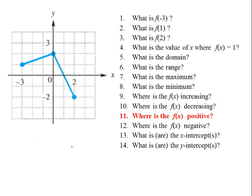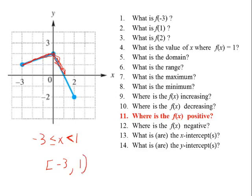Where is f of x positive? f of x is positive in quadrant 1 and quadrant 2, so all these y values in quadrants 1 and 2 are positive. From negative 3 up to x equals 1, all these are positive y values. x can equal negative 3 because that y value is 1 which is positive, but when we get to x equals 1 the y value is 0, and 0 is neither positive nor negative, so we use a not-equal sign. In set notation: bracket negative 3 comma 1 open parenthesis.